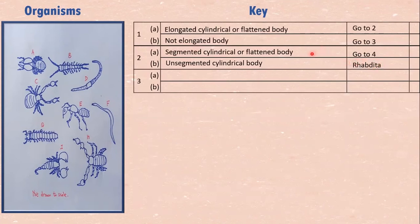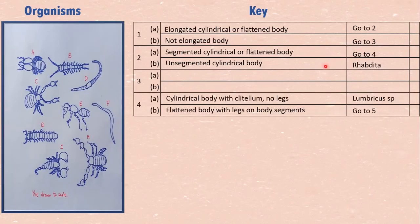Now, we have to deal with this. So we give it the box four. Three is still vacant because that one should not be touched until we have finished with the elongated. So four, we came to four to sort out the segmented, cylindrical, and flattened ones. So we came here for they are all segmented, but D is cylindrical body and has a clitellum. No legs. So we've sorted it. That is Lumbricus.